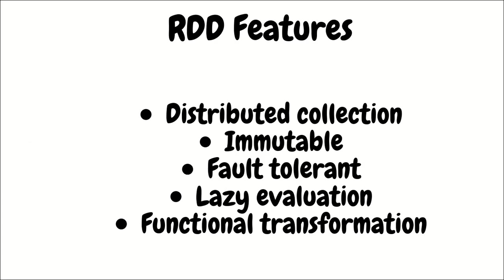Some key features of RDD: First is distributed collection — RDD allows users to write parallel computations using a set of high-level operators without having to worry about work distribution and fault tolerance. Second is immutability — RDD is composed of a collection of records which are partitioned. A partition is the basic unit of parallelism in an RDD, and each partition is one logical division of data which is immutable and created through transformations on existing partitions. The ultimate objective of immutability is to achieve consistency.